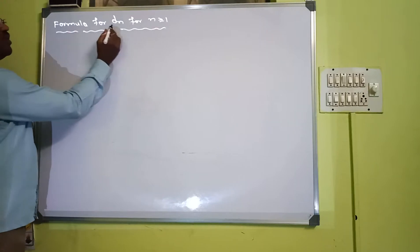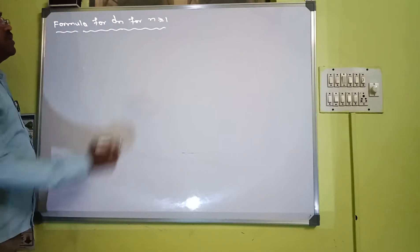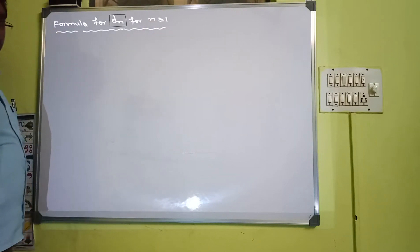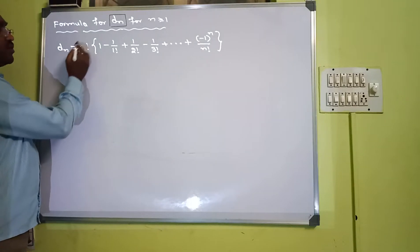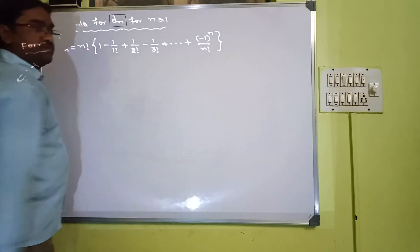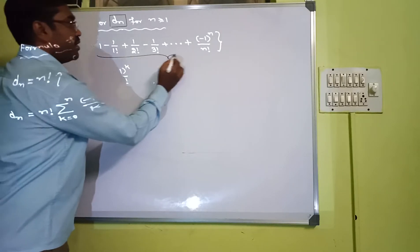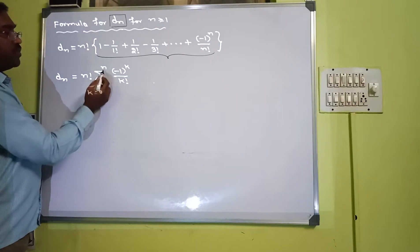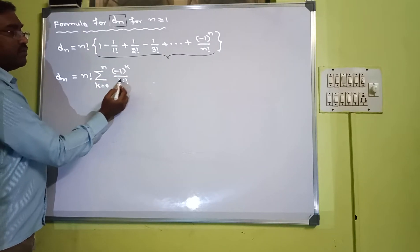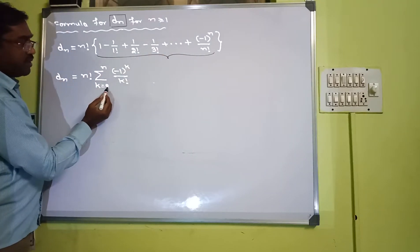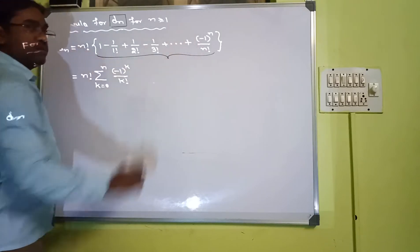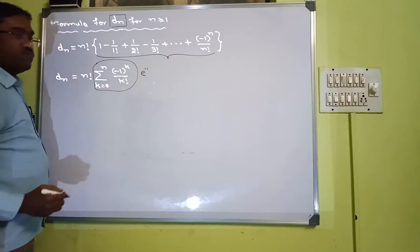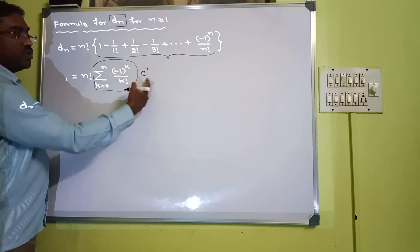The formula for Dn, for n greater than or equal to 1, tells us how many derangements we will have for n elements. The formula is n factorial multiplied by a series, which can be written using summation notation as: summation from k=0 to n of (-1)^k divided by k factorial. This series is of the form e to the power minus 1 — it is the expansion of e^(-1).